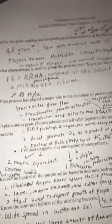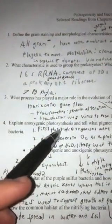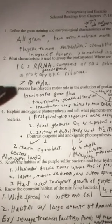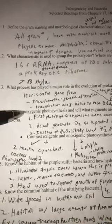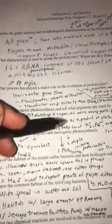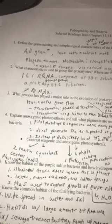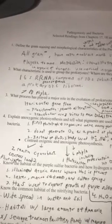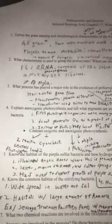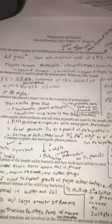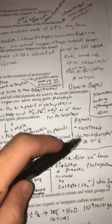Explain anoxygenic photosynthesis. That is basically where oxygen is not a product of photosynthesis. The first photosynthetic organisms were actually anoxygenic. What pigments are used by purple photosynthetic bacteria? Carotenoids and bacteriochlorophylls a or b.